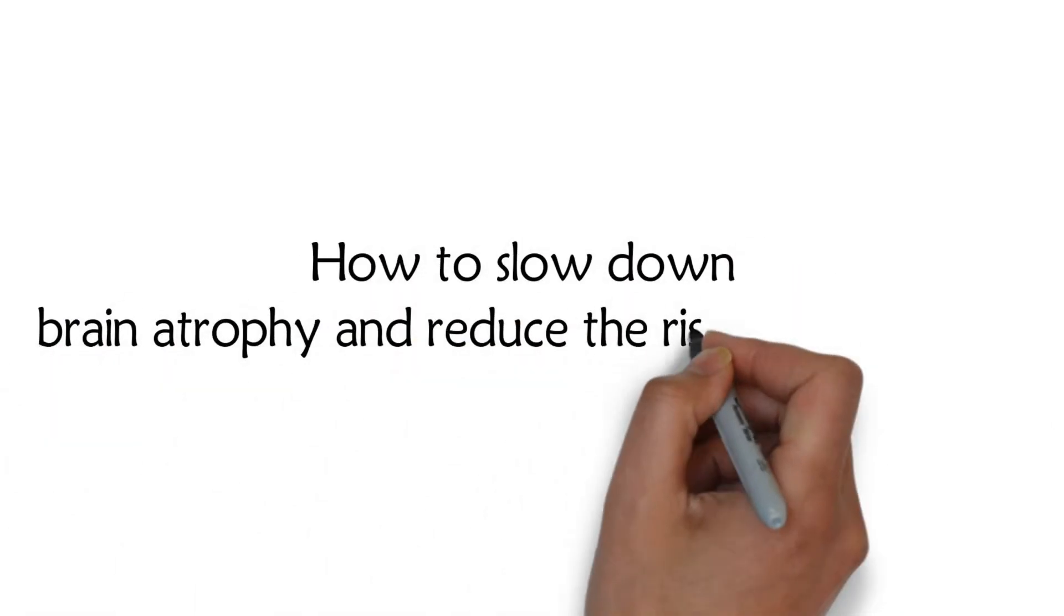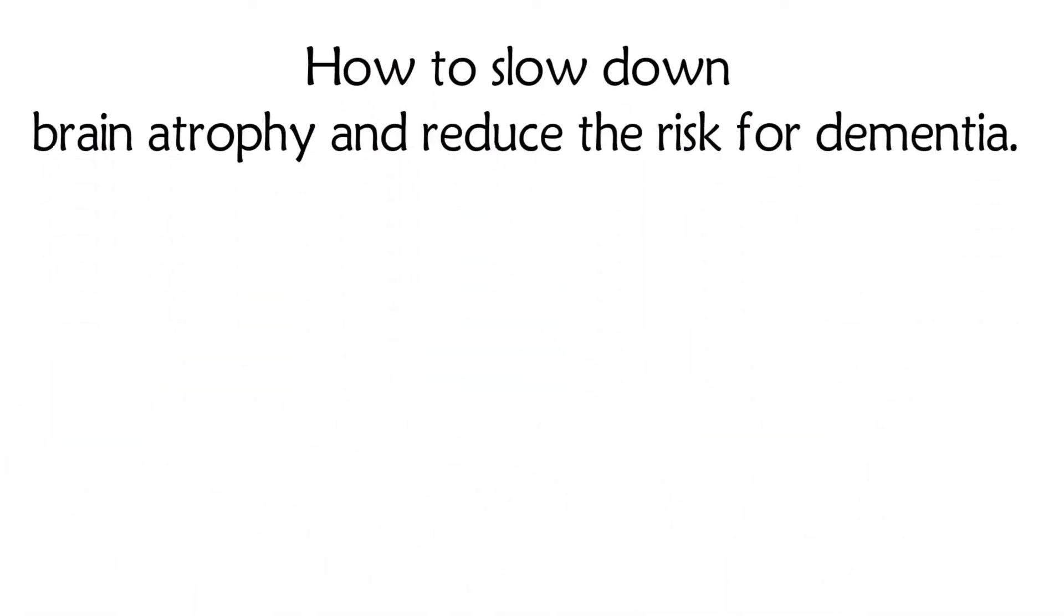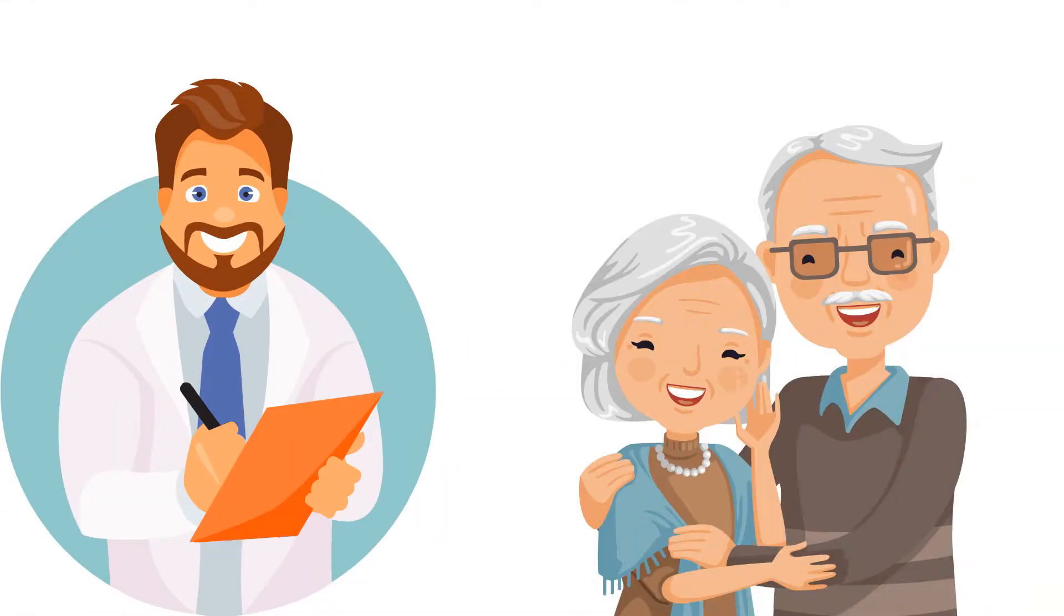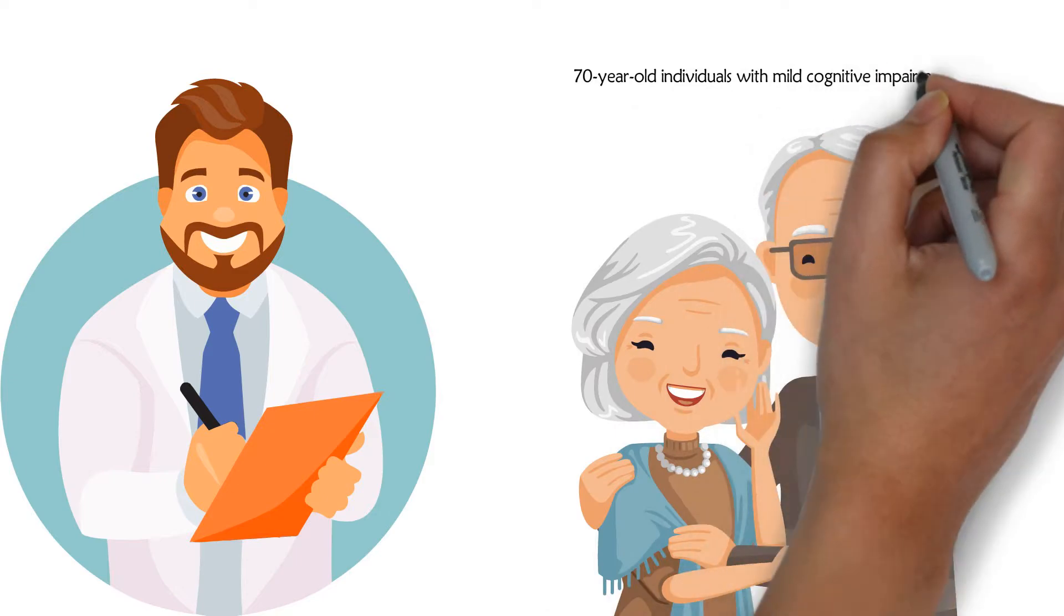How to slow down brain atrophy and reduce the risk for dementia. In this randomized double-blind control study, the participants were 70-year-old individuals with mild cognitive impairment.